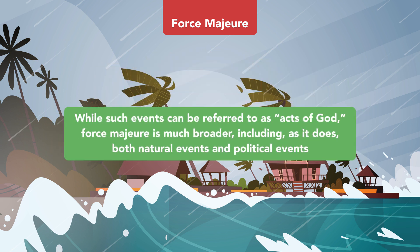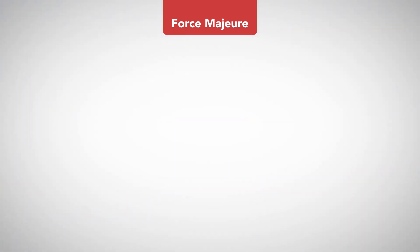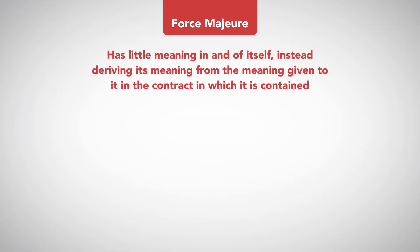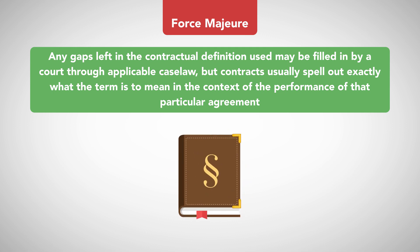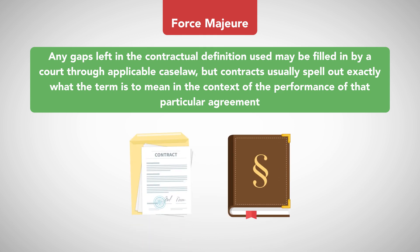While such events can be referred to as acts of God, force majeure is much broader, including, as it does, both natural events and political events. The term force majeure has little meaning in and of itself, instead deriving its meaning from the meaning given to it in the contract in which it is contained. Any gaps left in the contractual definition used may be filled in by a court through applicable case law, but contracts usually spell out exactly what the term is to mean in the context of the performance of that particular agreement.